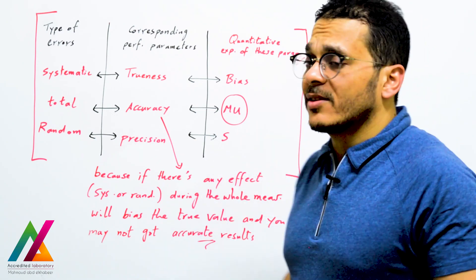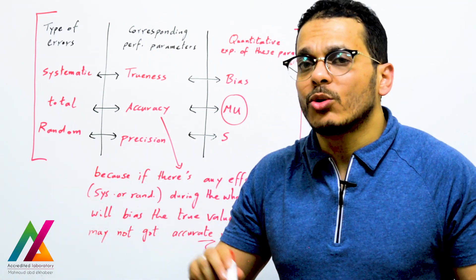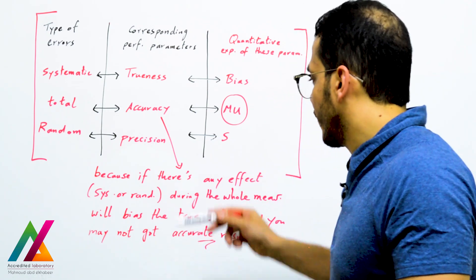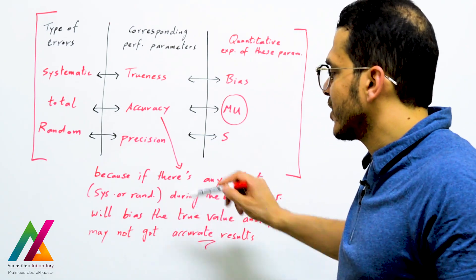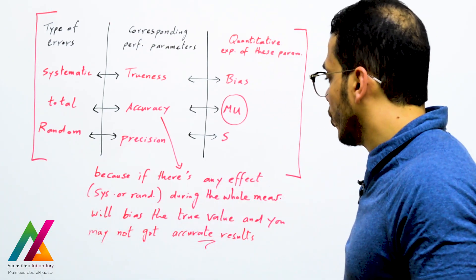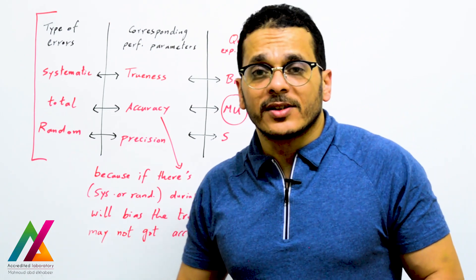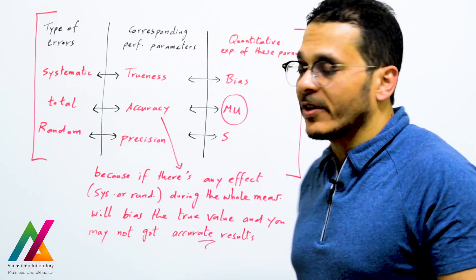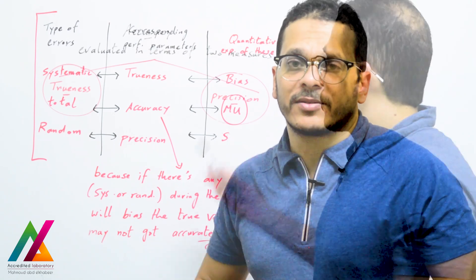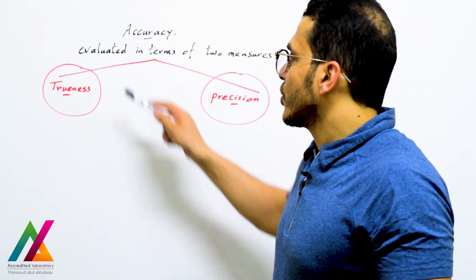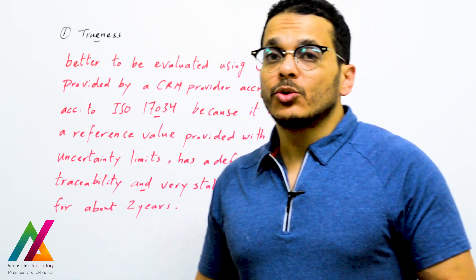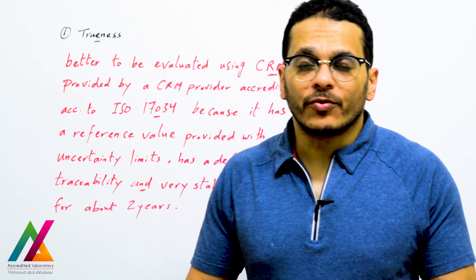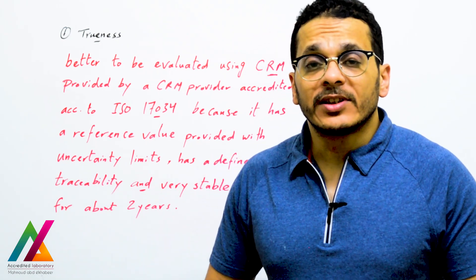Measurement uncertainty is a value added to the final result to compensate for all effects on the measurement. Any systematic or random effect during the whole measurement can bias the true value and lead to inaccurate results. By adding measurement uncertainty to the final result, you compensate for all systematic and random effects and achieve accurate results. So accuracy is evaluated in terms of two measures: trueness and precision.